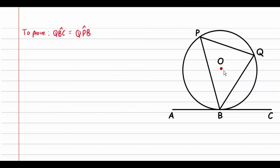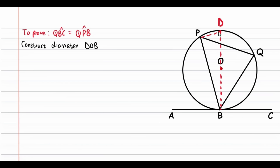To prove this theorem, we're going to construct a diameter and name this point D, then join points D and P to construct line DP. Make sure to write down any constructions you have made. So we write down that we've constructed the diameter DOB and line DP.